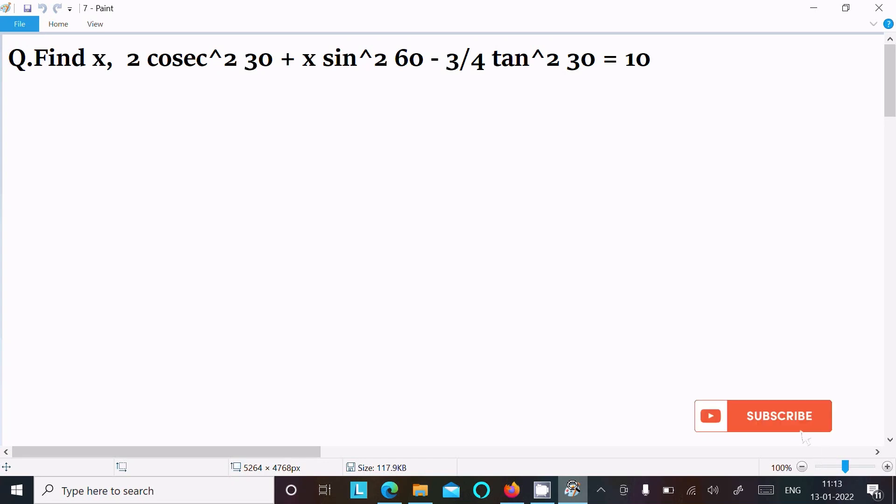In this lecture, I am going to find the value of x. The given equation is 2 cosec² 30 + x sin² 60 - 3/4 tan² 30 = 10. So let's see the answer.